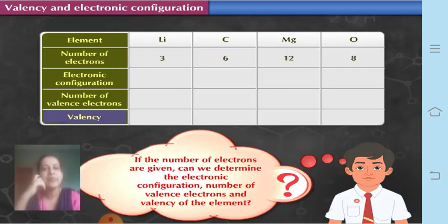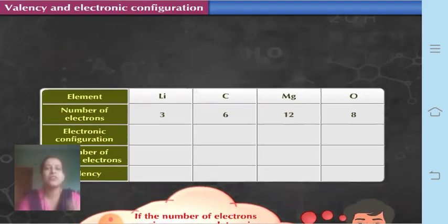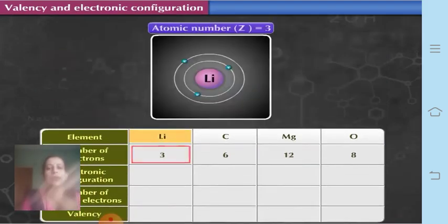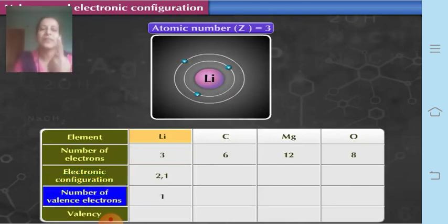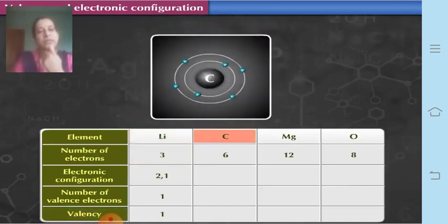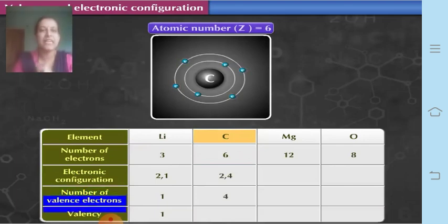Let us take a few examples. Lithium has atomic number 3, so the number of electrons is 3. The electronic configuration becomes 2, 1. The number of valence electrons is 1 and valency is also 1. Carbon has atomic number 6, so the number of electrons is 6. Its electronic configuration is 2, 4. The number of valence electrons is 4 and valency is also 4.